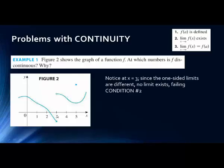Notice that at x equals 3, since the one-sided limits as we approach 3 from the positive direction give one y-value, and from the negative direction y is a different value, there's a jump here. No limit exists, and therefore it fails condition 2. It's very easy to see that this is discontinuous. The key thing is for you to understand why — and those reasons are one of these three conditions.